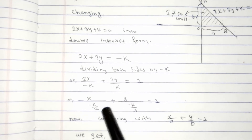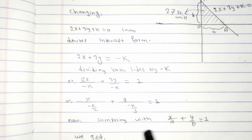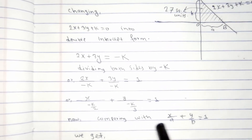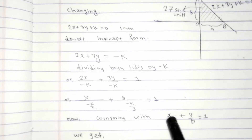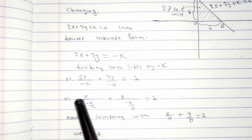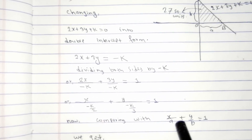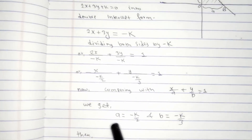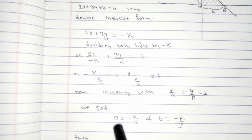After rewriting in this form and comparing with the double intercept general form x/a + y/b = 1, we can find the values of a and b. Comparing the equations, in place of a there is −k/2, and in place of b there is −k/3. So a = −k/2 and b = −k/3.